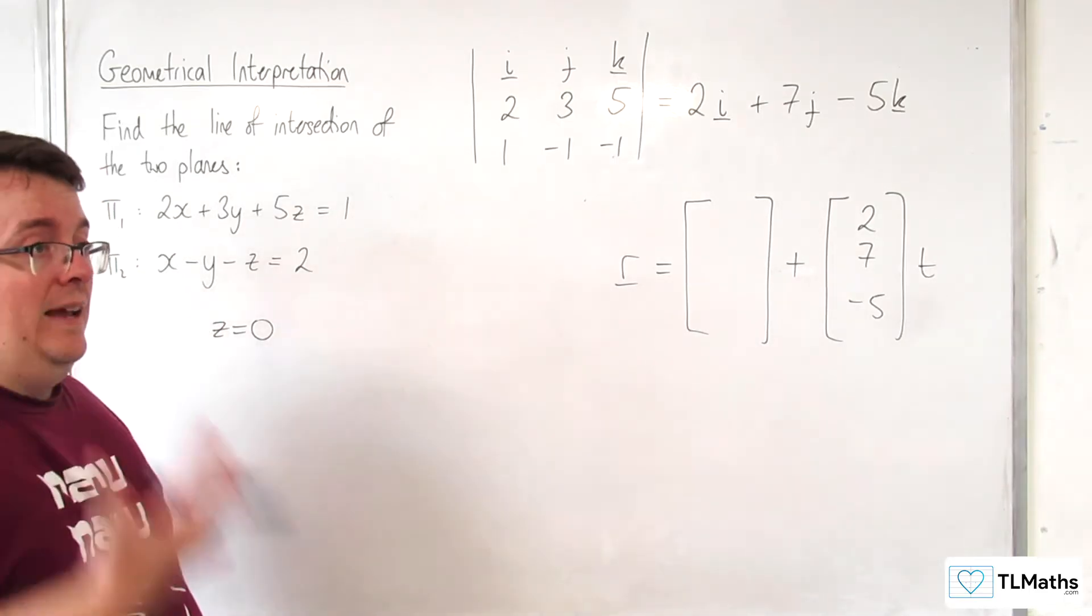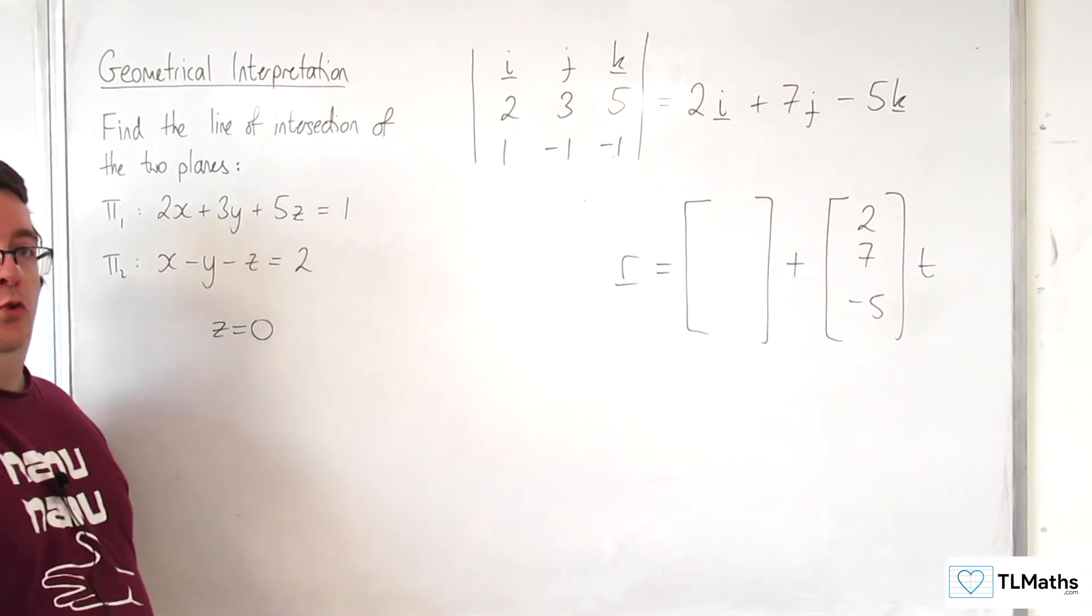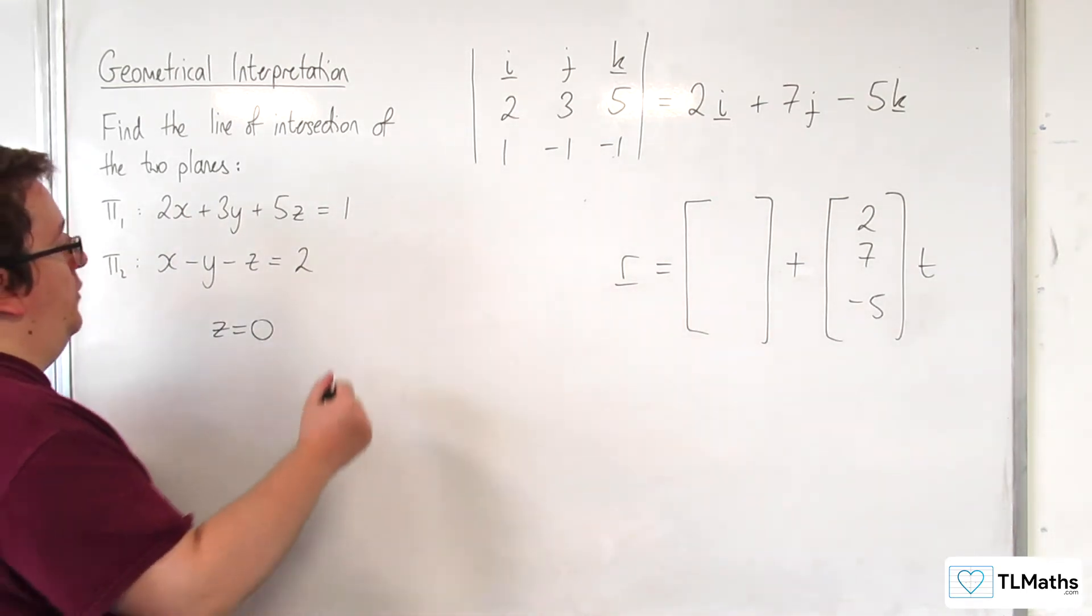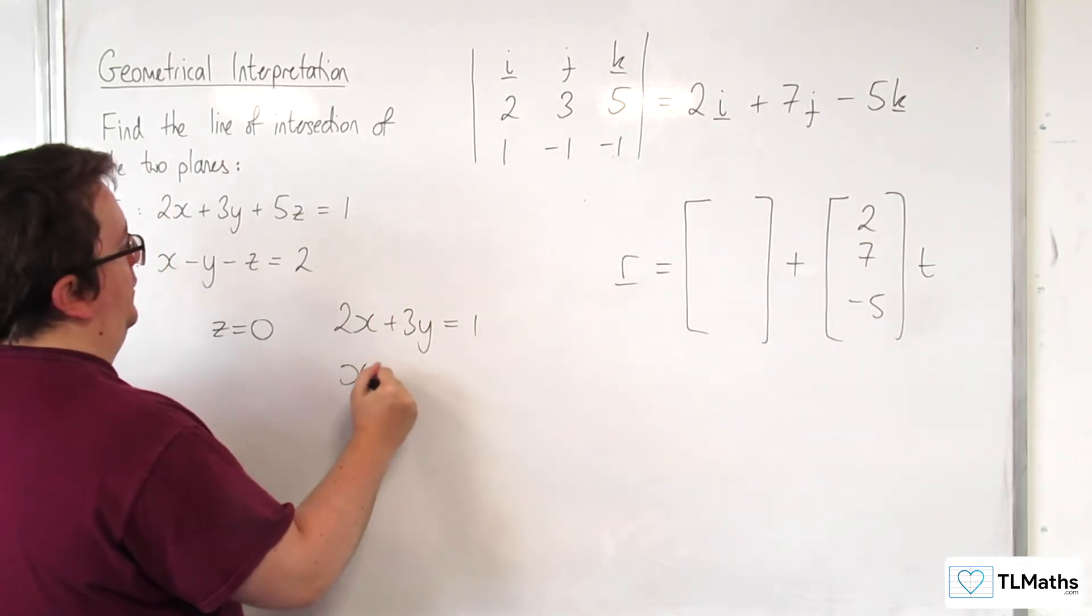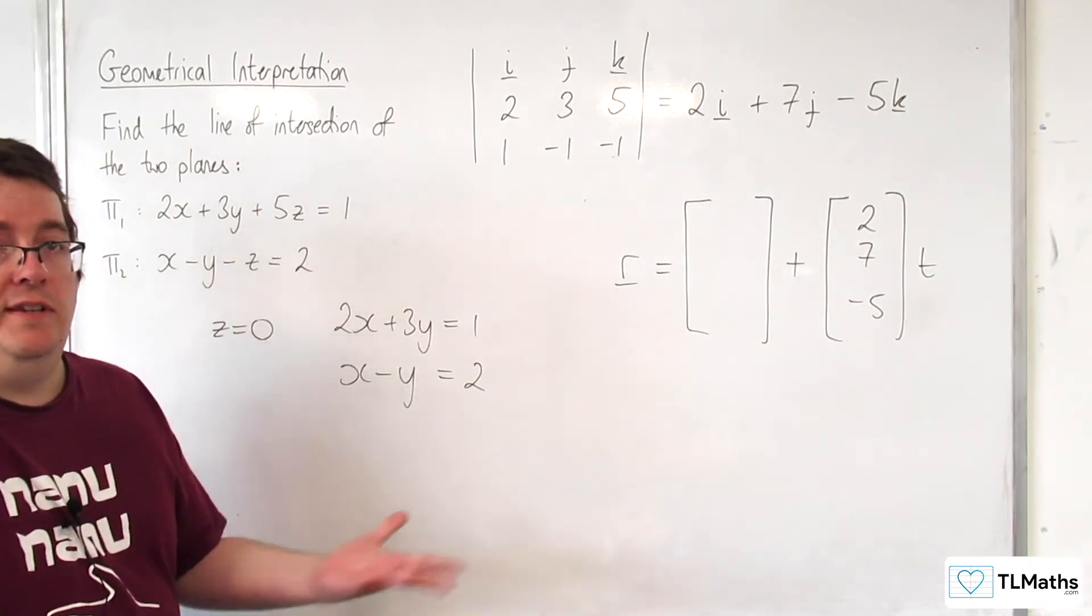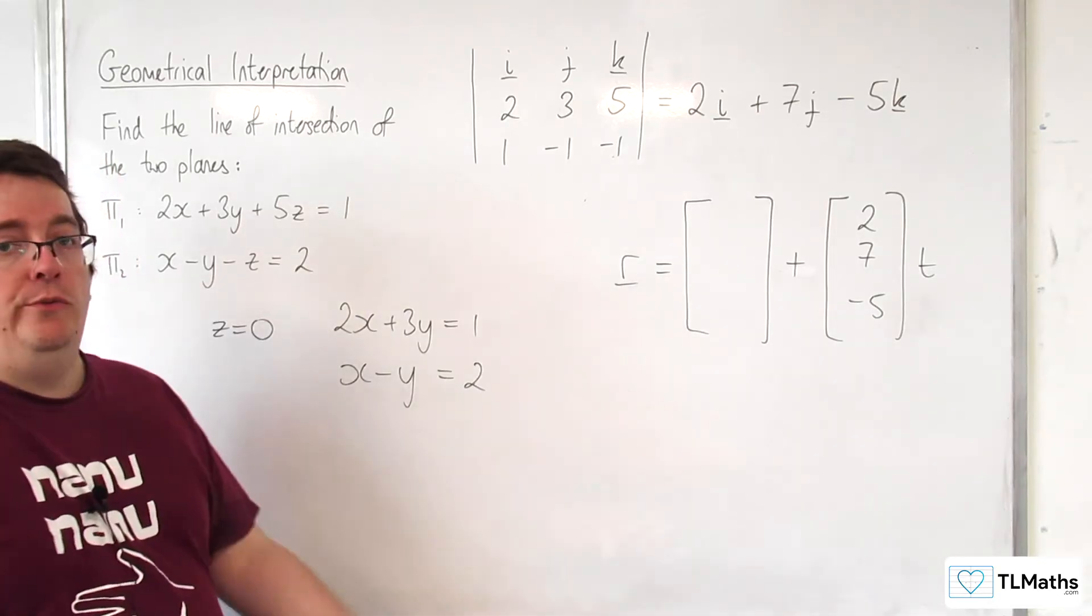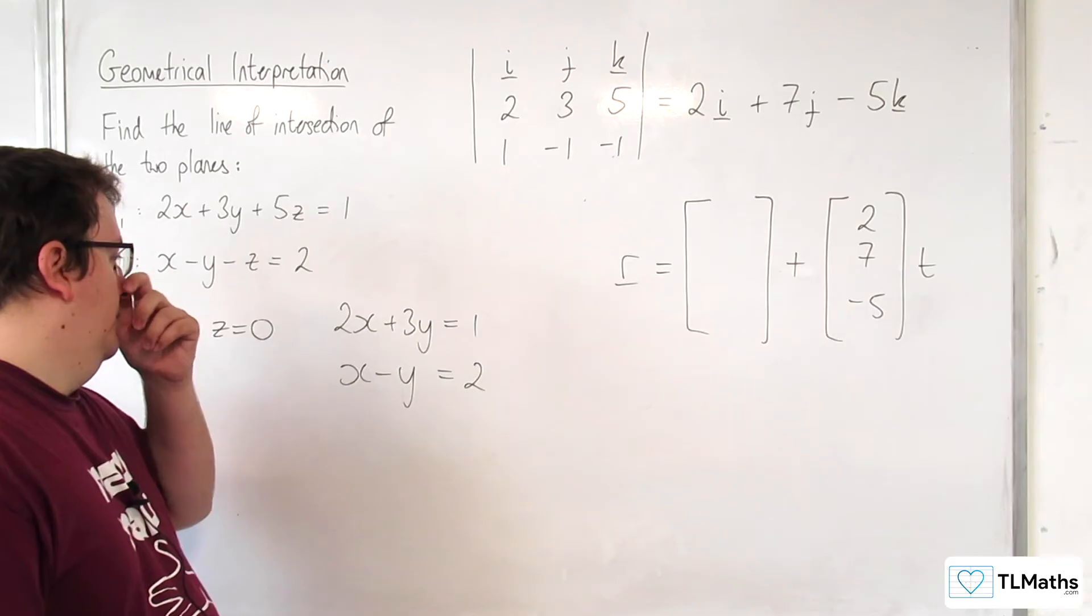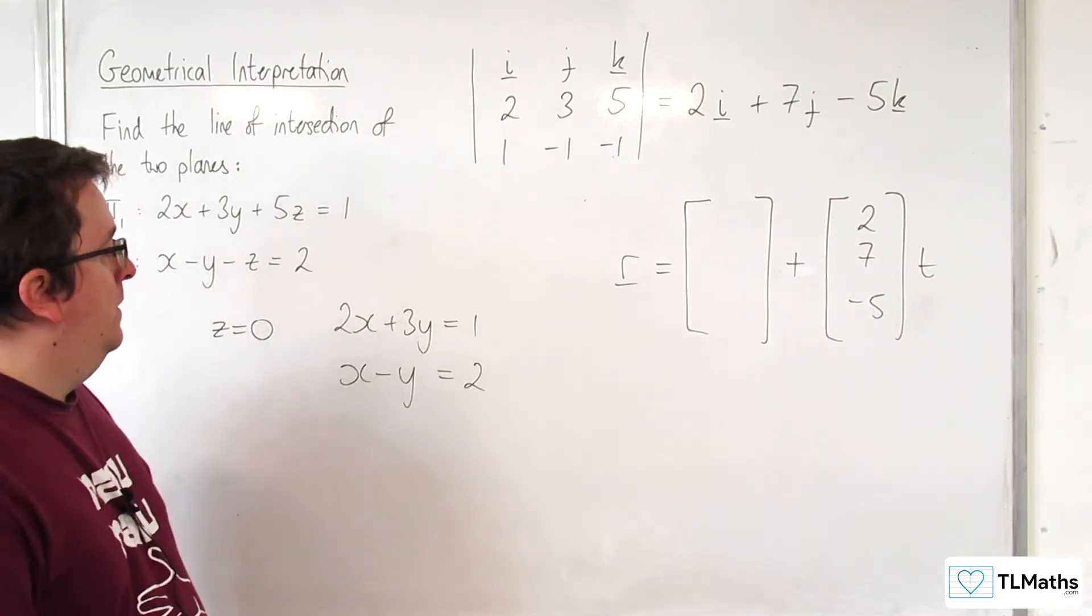So I'm going to find a coordinate with the Z coordinate as being 0, with this point being on the two planes, because it's got to be on the line. Now as I said, I'd have to be unlucky for this not to work. And the only way that this couldn't work is that the two equations that I end up getting, so 2X + 3Y = 1 and X - Y = 2, is if these two lines ended up being parallel to one another. In which case, I would just choose another value and see how that goes. I might choose Y to be 0 instead.